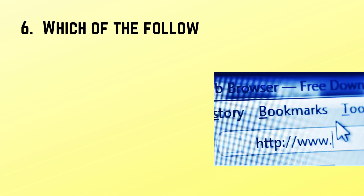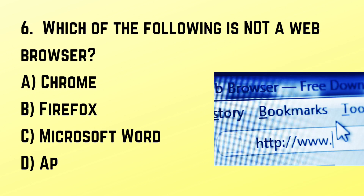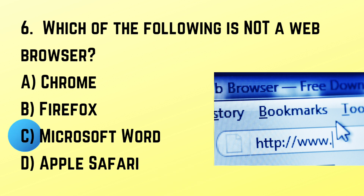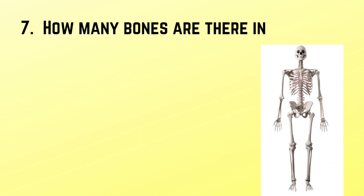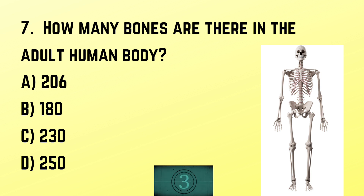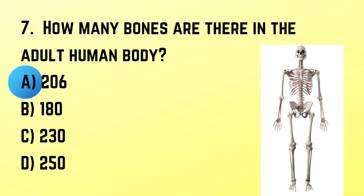Question number 6: Which of the following is not a web browser? Correct answer: C. Microsoft Word. Question number 7: How many bones are there in the adult human body? Correct answer: A. 206.